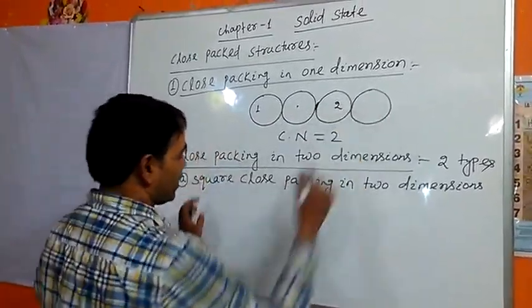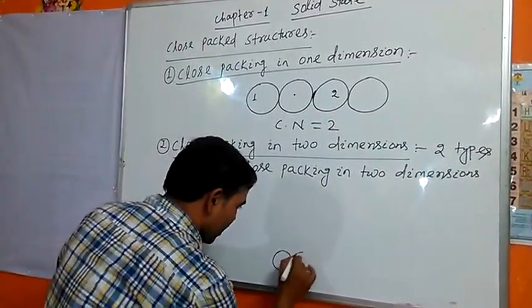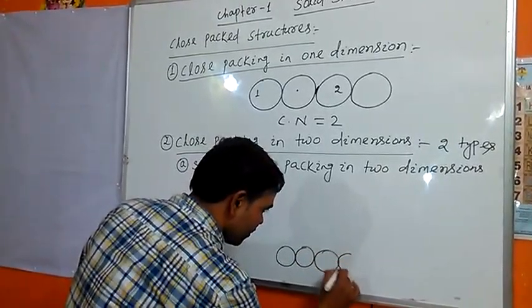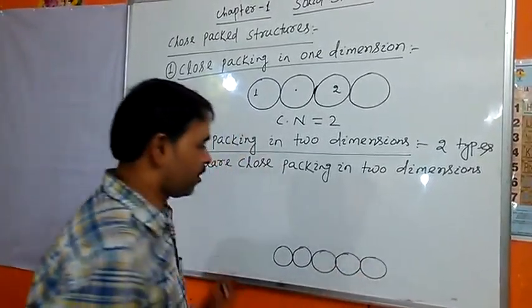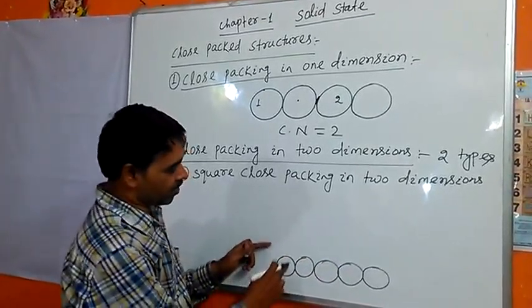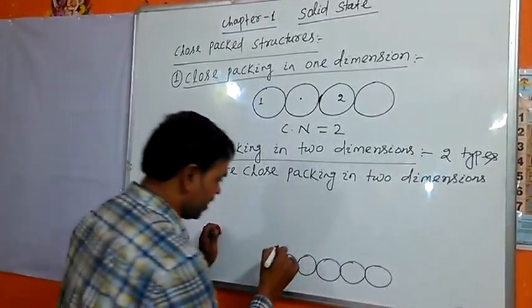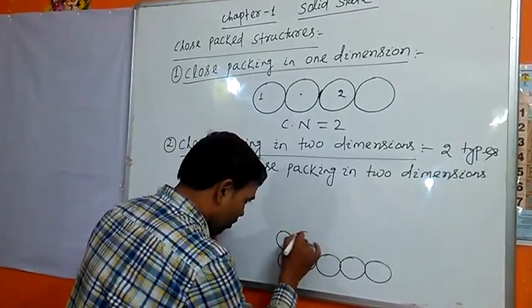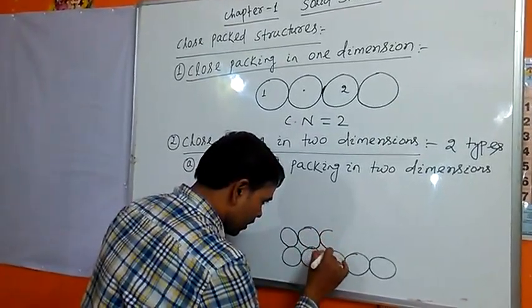Square close packing in two-dimensions. First you will arrange the atoms in a single row, like this, single row, then you put the second row. How you put the second row? One atom above the other, exactly one atom above the other, like this.